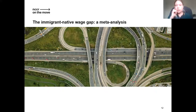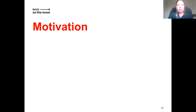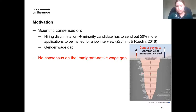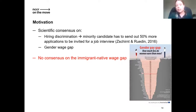The first study I want to talk about is a meta-analysis on the immigrant-native wage gap. There is scientific consensus on ethnic hiring discrimination — many correspondence experiments show that minority candidates have less chance of being invited for a job interview. More recently, meta-analyses show this is very consistent: a minority candidate has to send out 50% more CVs in order to be invited for the same number of job interviews as a majority candidate.